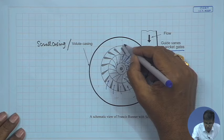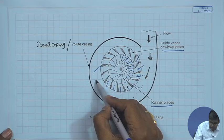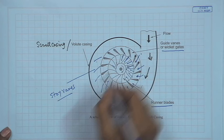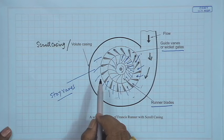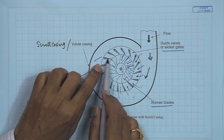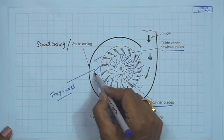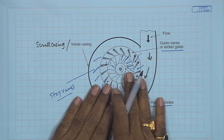Sometimes additional blades called stay vanes are provided to direct the fluid to the wicket gates. The wicket gates are pivoted at points so that they can be rotated about the pivotal point to increase or decrease the flow passage area between the blades. This is required for changing the fluid flow to the runner for governing purposes due to changes in load.